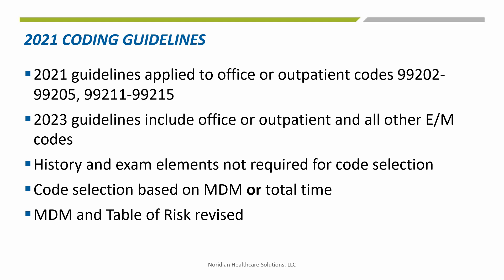Here are things you should know about the 2021 coding guidelines. Changes only applied to office or other outpatient codes 99202 through 99215. Code 99201 was removed as the medical decision making was the same as 99202. The guidelines did not apply to any other E&M services such as hospital, emergency room, or nursing facility codes. These now fall under the 2023 guidelines.